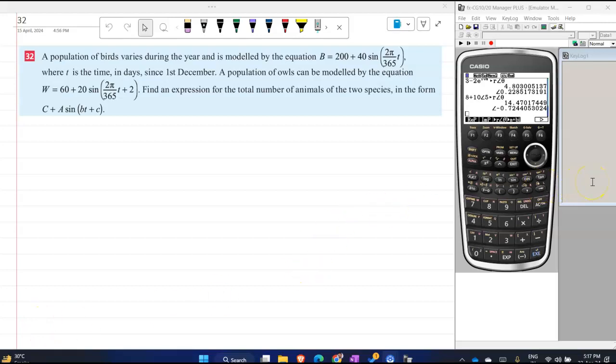So again, a population of birds during the year is modeled, and the two models are there. B is equal to 200 plus 40 sin 2π/365 T, where T is the time in days since 1st December. The population of owls can be modeled by the same thing. We need to explain the total number of animals of the two species in this form, so basically you have to combine them.